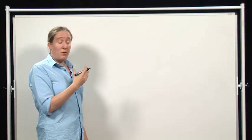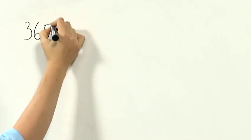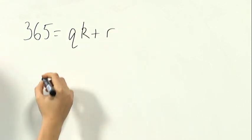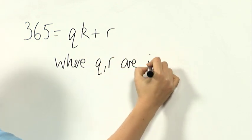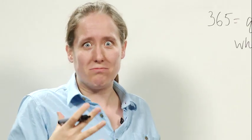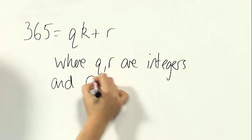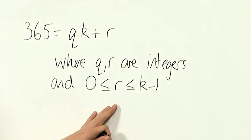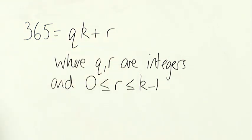So if we divide 365 by k, we can write 365 is q times k plus r, where q and r are integers. And it just means whole numbers, it's just shorter to write on the board. And zero is less than or equal to r is less than or equal to k minus 1. So r here is the remainder.